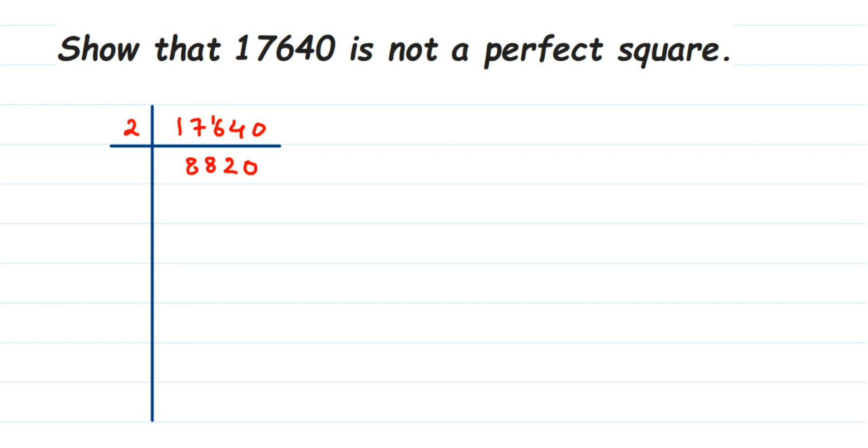The next number, the given number is also even, so the number we got is also an even number. We'll go with 2 again. 2 times 4 is 8, 2 times 4 is 8, 2 times 1 is 2, 2 times 0 is 0. Again, this is an even number, so we'll go with 2 again. 2 times 2 is 4, 2 times 2 is 4.